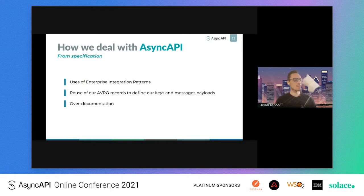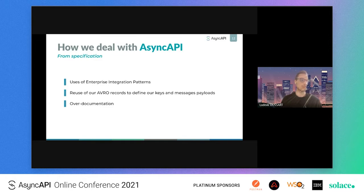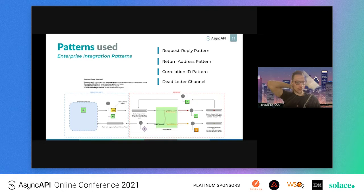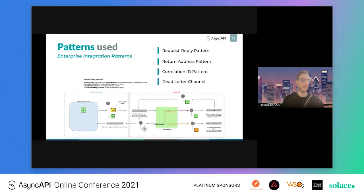So how we deal with AsyncAPI: we have three approaches to document our process. We use enterprise integration patterns, we reuse our Avro records to define our message keys and payloads in the documentation, and we produce AsyncAPI specification documentation. About the patterns we use — we mainly use four: the request-reply pattern, the return address pattern, the correlation ID pattern (those three work together), and finally the dead letter channel pattern to handle errors during processing.